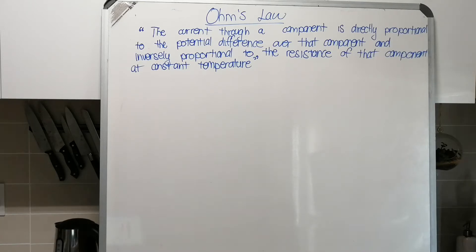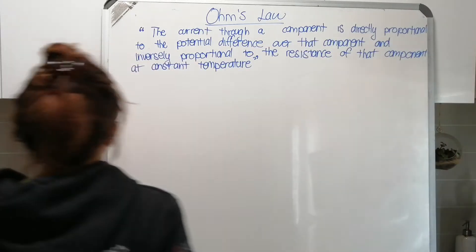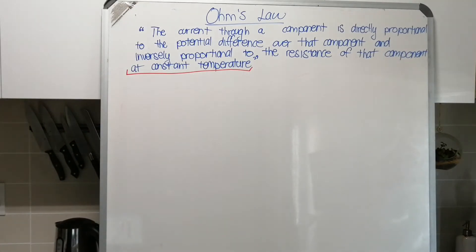Ohm's Law applies to specific components - only those components that are considered ohmic components. Ohm's Law says that the current through a component is directly proportional to the potential difference over that component, and is inversely proportional to the resistance of that component. Now on your worksheet this is missing - you need to please add it as part of the definition: at a constant temperature. It's very important that you include that this is only true if your temperature remains constant.